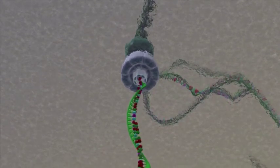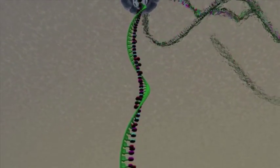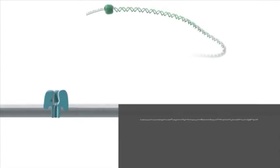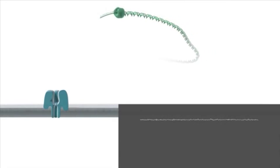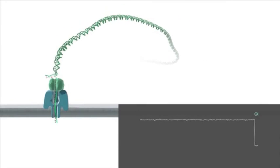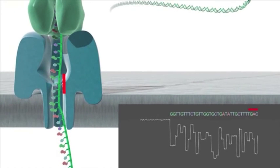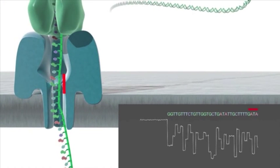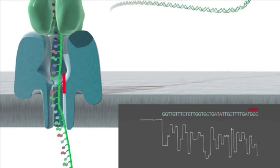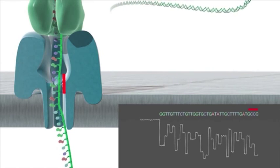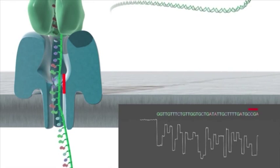Just to recap: the DNA is pulled through the nanopore by the difference in potential, and as it goes through, the unique changes in current caused by each nucleotide are interpreted by the MinION system to produce a sequence.